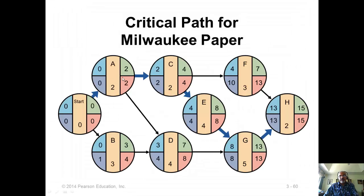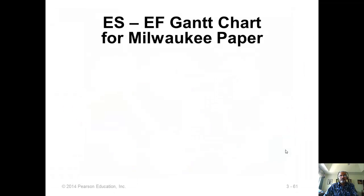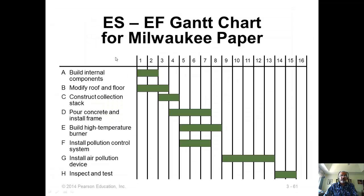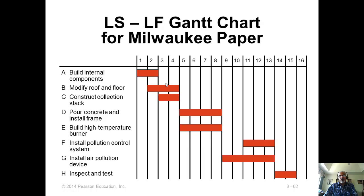Here is the critical path. We can also construct a Gantt chart based on the earliest start and finish times, where each bar represents the start and finish time of an activity. Alternatively, it can be based on the latest start and latest finish times — the latest start and finish time Gantt chart will be slightly shifted to the right.